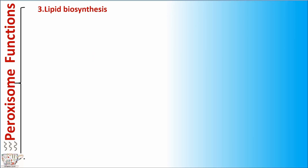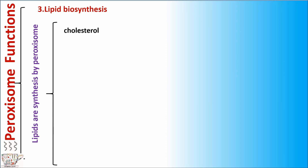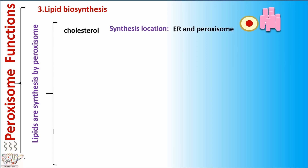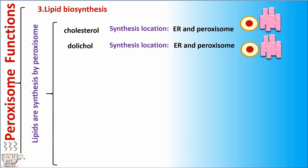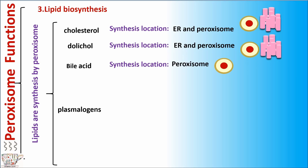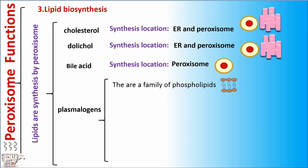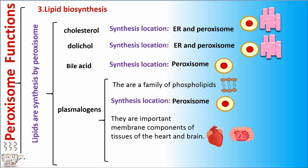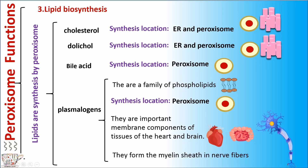Function number three: lipid biosynthesis. Lipids are synthesized by proxysomes. For example, cholesterol — synthesis location is ER and proxysome. Dolichol — synthesis location is ER and proxysome. Bile acid — synthesis location is proxysome. And plasmalogens, which are a family of phospholipids — synthesis location is proxysome. They are important membrane components of tissues of the heart and brain, and they form the myelin sheath in nerve fibers.